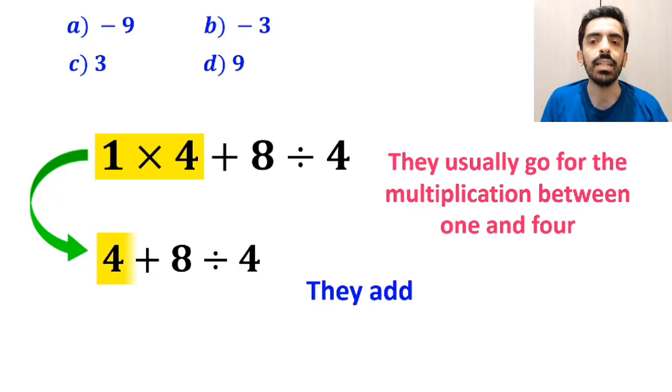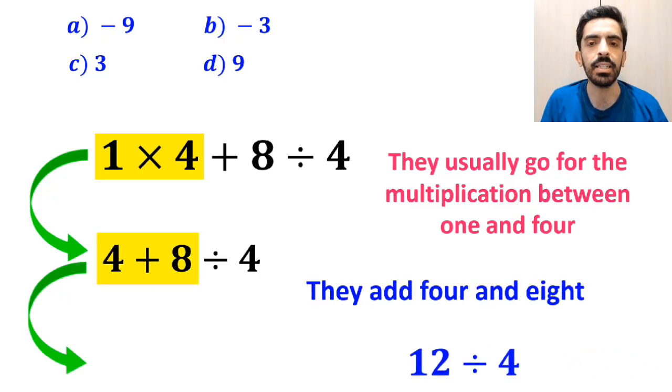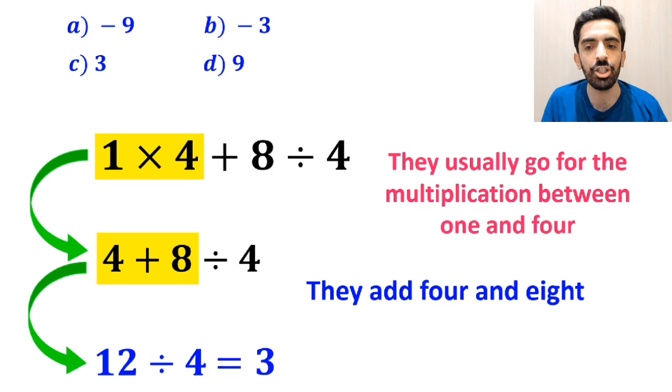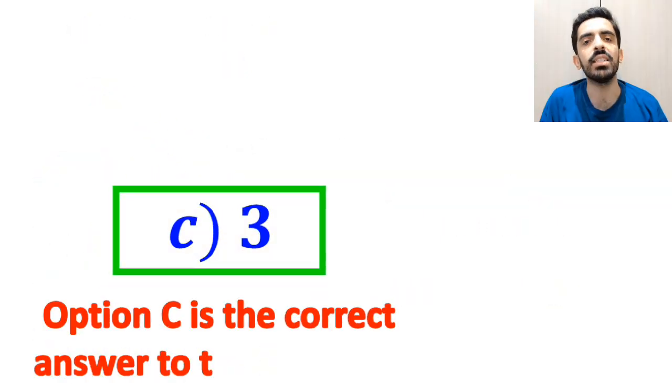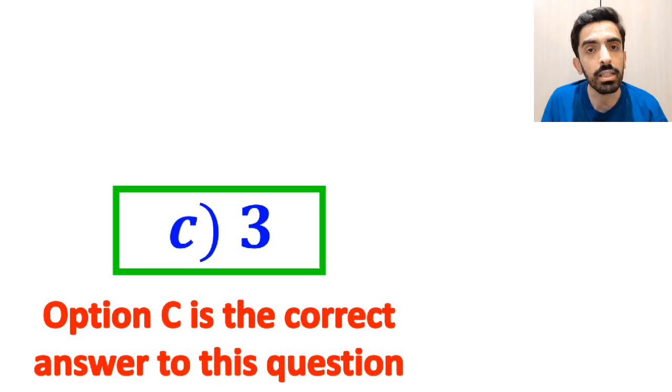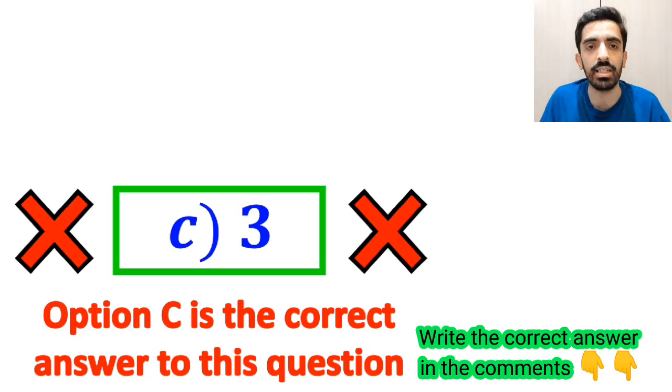Then they add 4 and 8 and write this expression as 12 divided by 4, which finally gives them the answer 3. And without any hesitation, they quickly say that option C is the correct answer to this question. But it's not the correct answer.